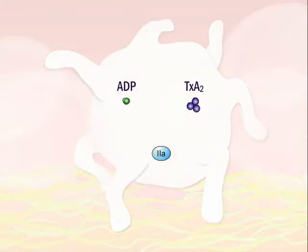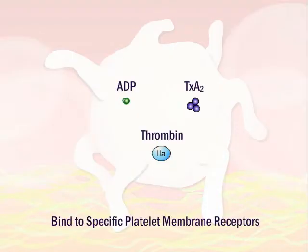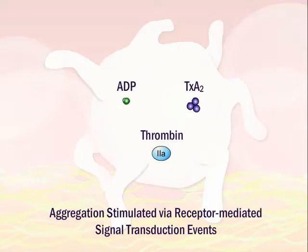ADP, thromboxane A2, and thrombin bind to specific platelet membrane receptors and stimulate aggregation on and around the platelets adherent to the subendothelium via receptor-mediated signal transduction events.